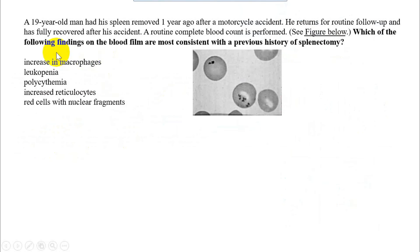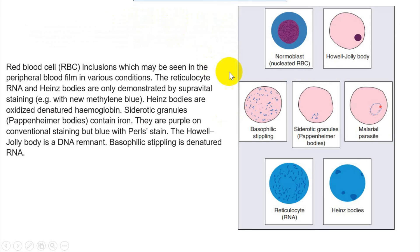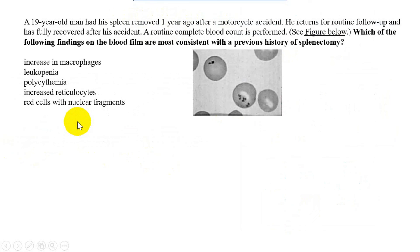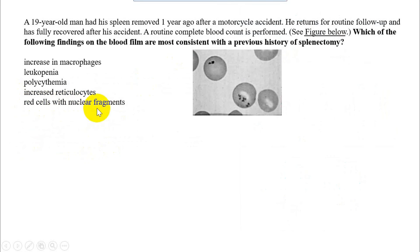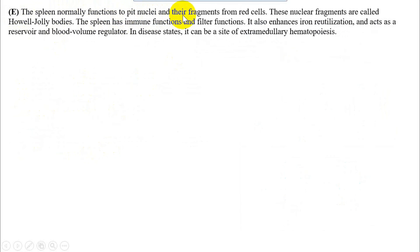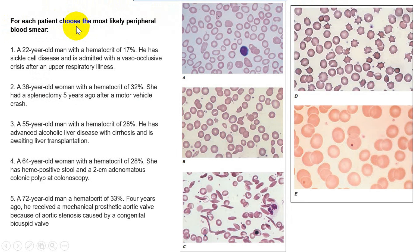Practice question: A 19-year-old man had his spleen removed one year ago. A peripheral smear is shown. Spleen removed means splenectomy. The peripheral smear shows Howell-Jolly bodies — red cells with nuclear fragments. The answer is 'red cell with nuclear fragment.' The spleen normally functions to pit nuclei and their fragments from red blood cells, which normally have no nuclei. When the spleen is not working, these nuclear fragments — Howell-Jolly bodies — are left behind in the red blood cells.